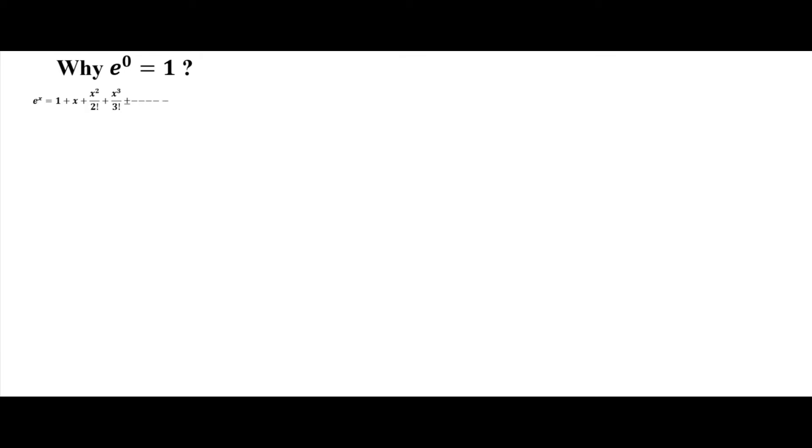Hi, I am Syed. Today we'll try to see why e to the power of 0 is taken as 1. We'll explore this by looking at the exponential function. The exponential function e^x is given by the formula: 1 plus x plus x squared by 2 factorial plus x cubed by 3 factorial, and so on.